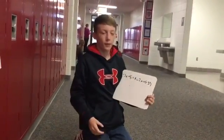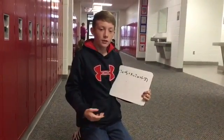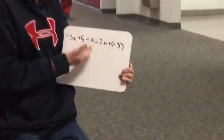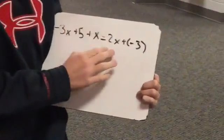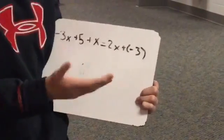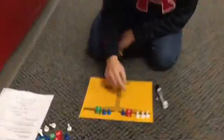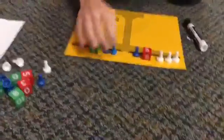The opposite of 3x plus 5 plus x equals 2x, excuse me, plus negative 3. Okay, so here's our problem down here. We got it all set up, got all the right pieces.